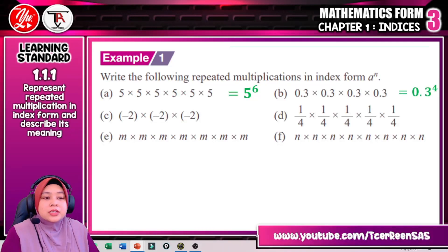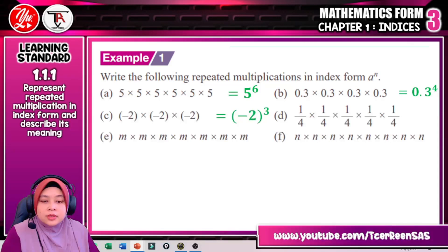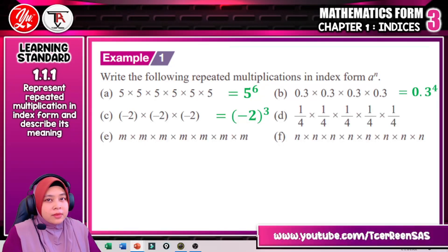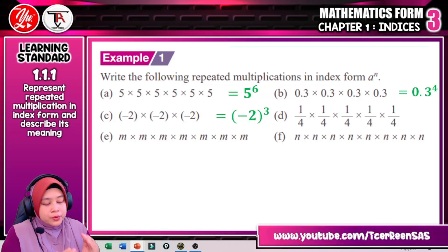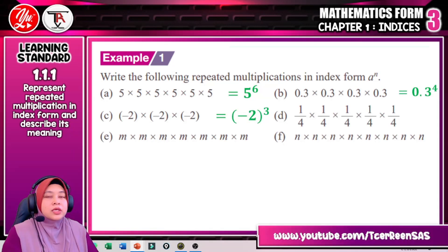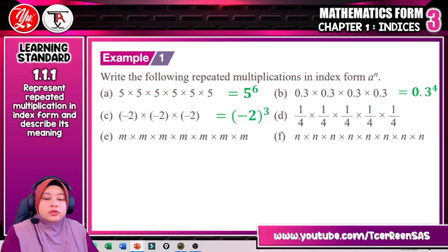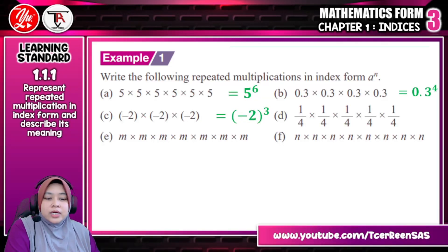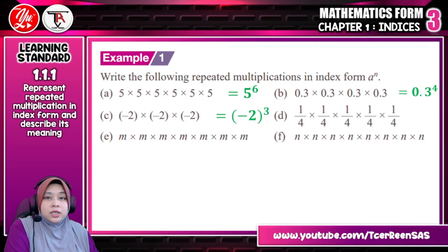For part B, the answer is 0.3 to the power of 4. For part C, negative 2 times negative 2 times negative 2 — we must put it in brackets because negative numbers and fraction numbers must be placed in brackets when writing in index form, to make it easier for any operation after this. So the answer is negative 2 in bracket to the power of 3. For part D, the expression is in fraction form: 1 over 4. If we want to write it in index notation, we need to put it in bracket, so the answer is 1 over 4 in bracket to the power of 5.